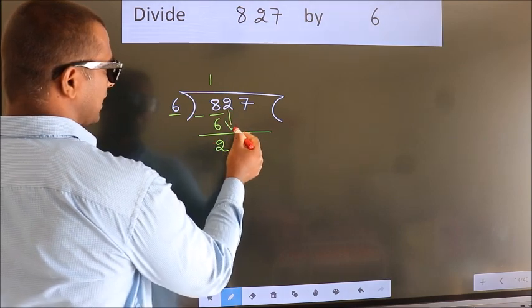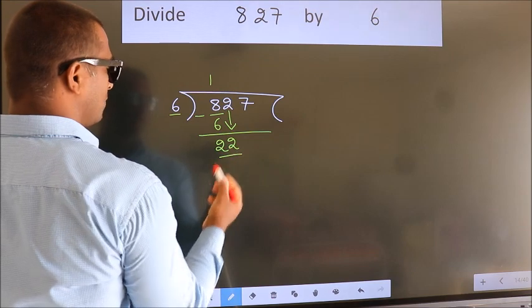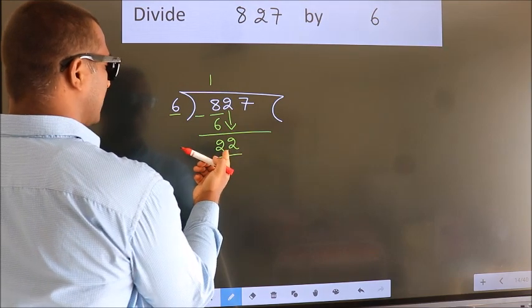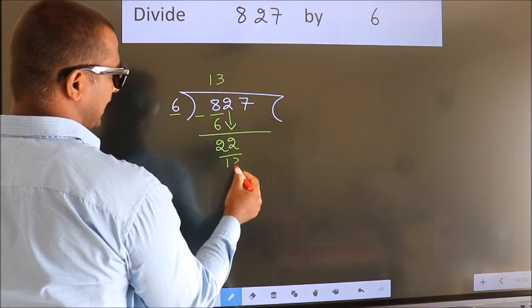After this, bring down the next number. 2 down, making 22. A number close to 22 in the 6 table is 6 threes, 18.